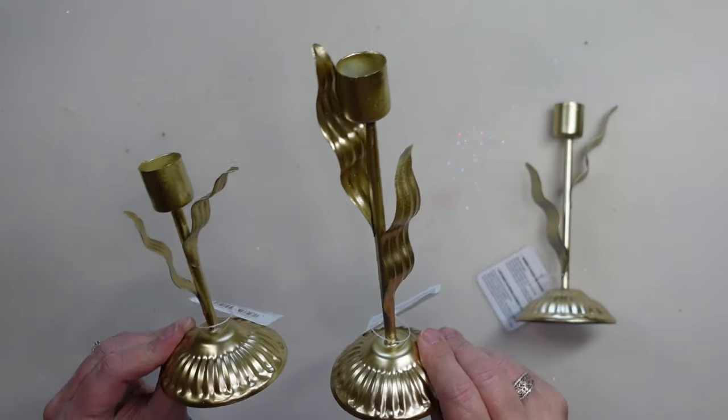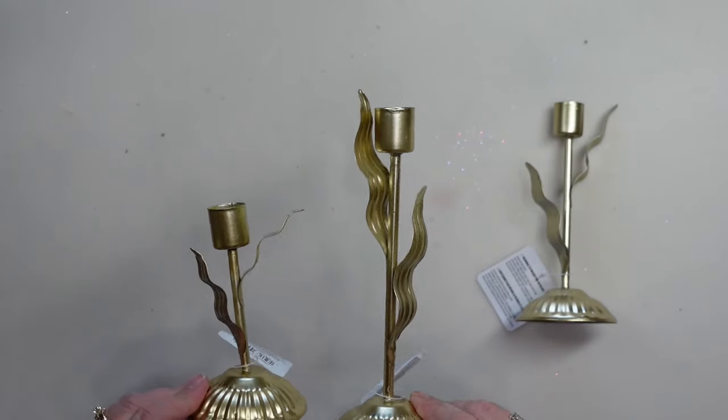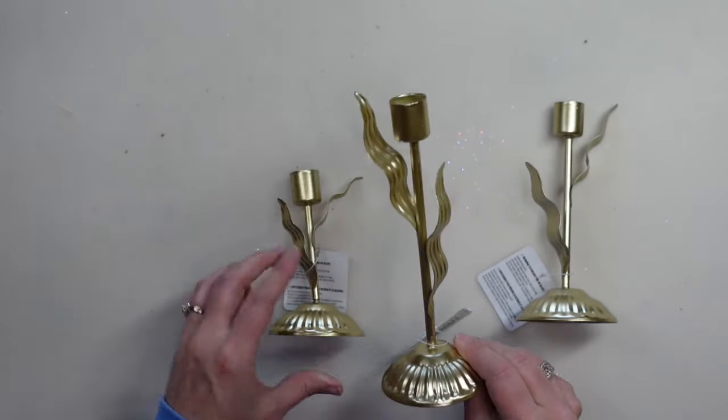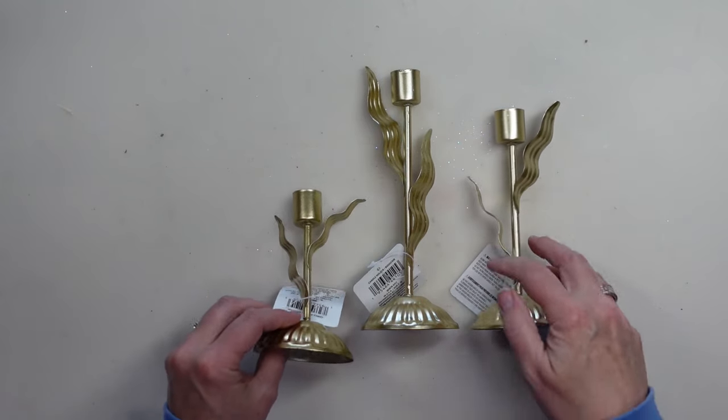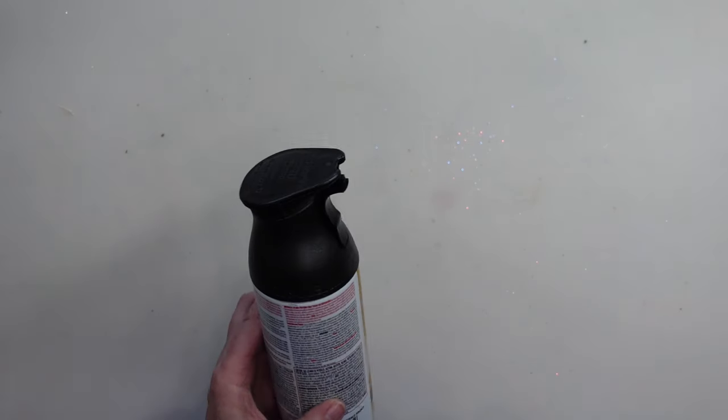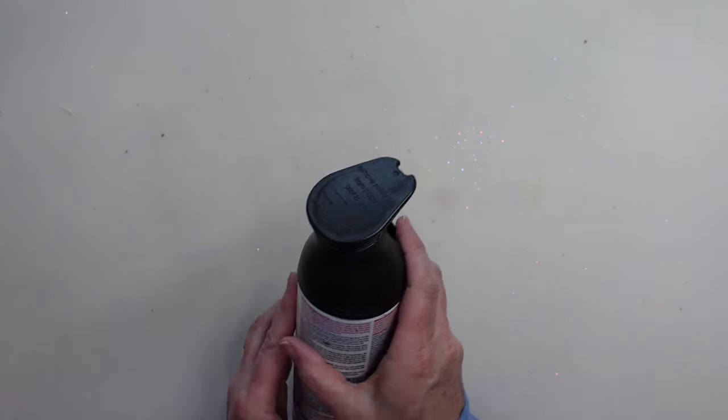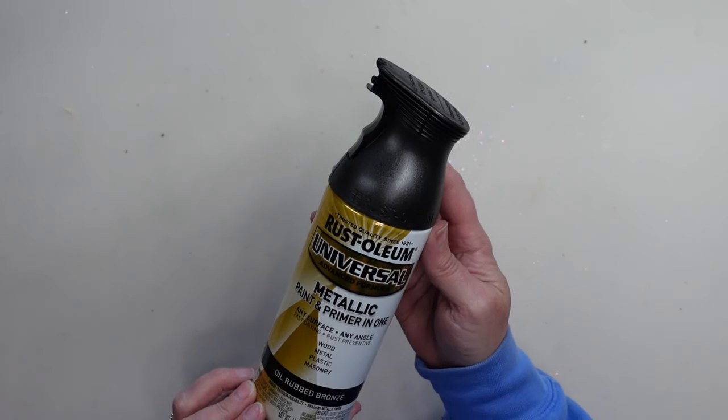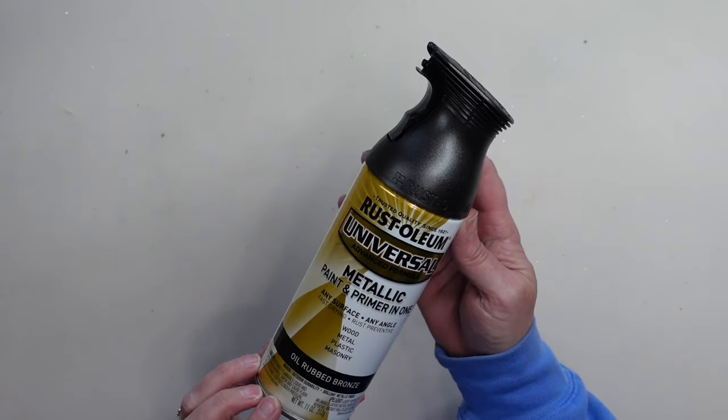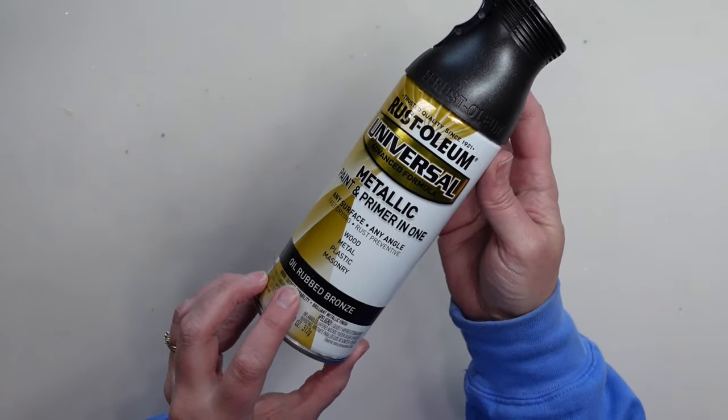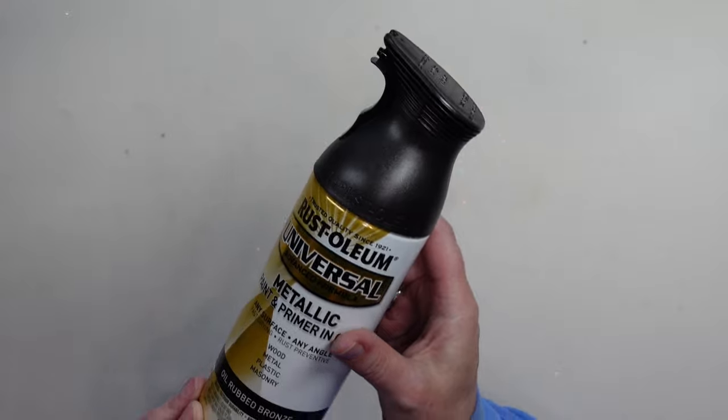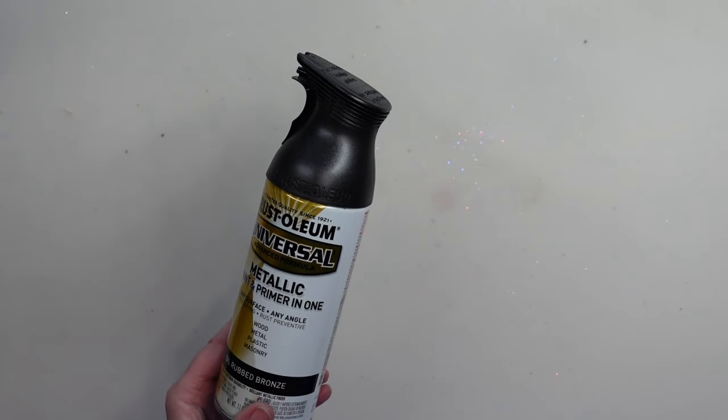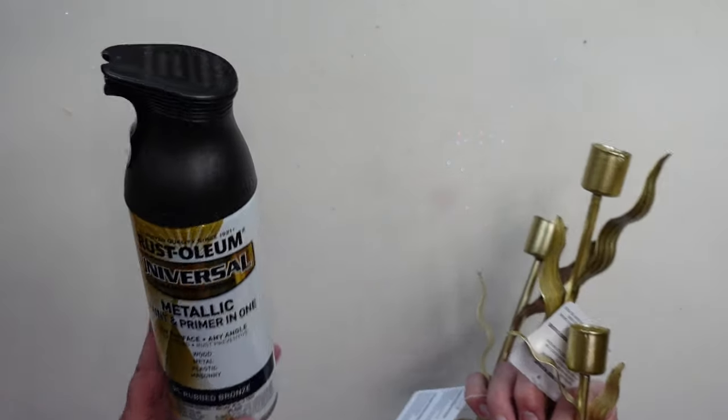So we're going to start with these candlesticks from Dollar Tree. I love the little leaf detail on them and the fact that there are three different sizes, so I picked up one of each size. And then because the gold is not my decor style, I'm going to use some of this Rust-Oleum metallic paint and primer in one in the oil rubbed bronze. You can see this will be the color of it. So I'm just going to go spray all three of these candlesticks in this paint.